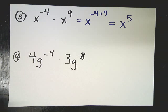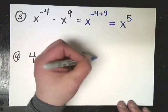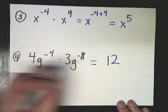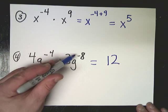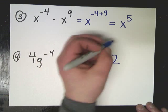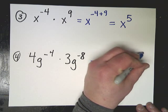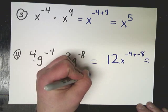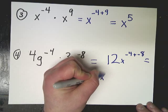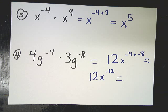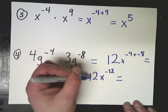In the next set, same type of thing. 4 times 3 is 12. Negative 4 plus negative 8. So it's 12x to the negative 12. And then in most cases, they don't want you to keep that negative exponent. They want you to move it. They'll say no negative exponents.